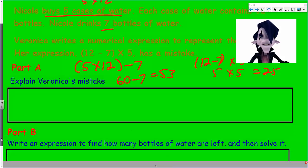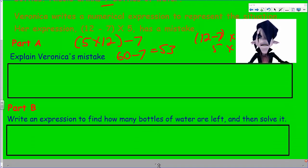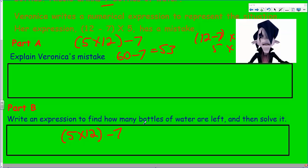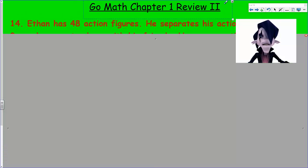Write an expression to find how many bottles of water are left and then solve it. We kind of already did that. We determined that it was 5 times 12, or 12 times 5, and then we're subtracting the 7. That's our expression and we solved it. We found out it was 53, 60 minus 7. Moving on to the next problem.